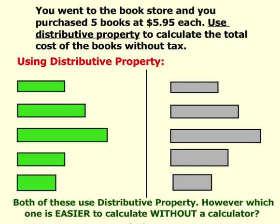Here's another video tutorial on how you can use Distributive Property when trying to solve a word problem. In this problem, you went to the bookstore and purchased five books at $5.95 each. Use Distributive Property to calculate the total cost of the books without tax.